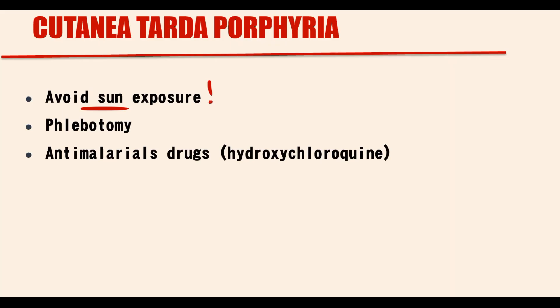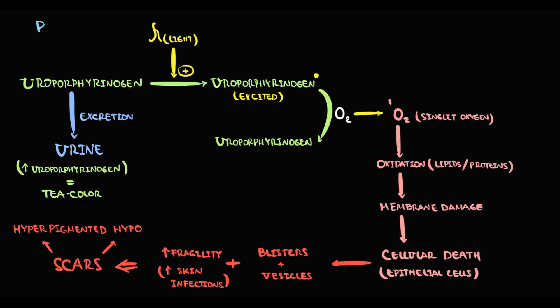The treatment options include phlebotomy. The idea here is that by removing blood with high uroporphyrinogen concentration, and by substituting blood with fluid, we decrease the concentration of uroporphyrinogen in the blood. As a result, the clinical manifestations will decrease, and the excretion of uroporphyrinogen with the urine will decrease.